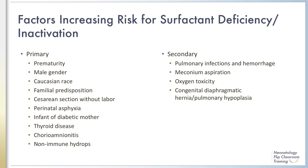Cesarean section without labor has appeared on a number of lists for RDS risk. We know that C-section without labor is a risk factor for transient tachypnea of the newborn with delayed clearance of amniotic fluid, but if the fluid remains and one requires oxygen support or positive pressure, this may result in inflammation and inactivation of surfactant. Perinatal asphyxia can also lead to inactivation of surfactant as a result of inflammation.